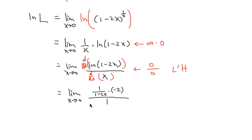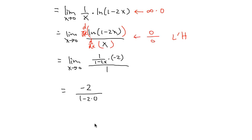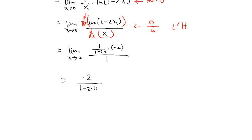We can just plug in 0 into the x, and this will take care of business. This is equal to negative 2 over 1 minus 2 times 0 over 1. So what we have is negative 2 over 1, which is negative 2.